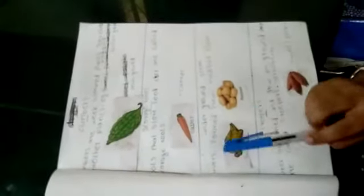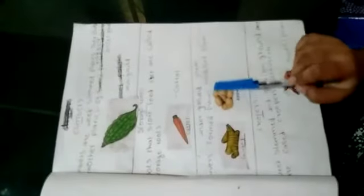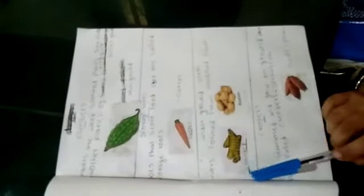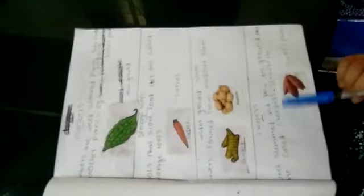Underground stem tubers: Formed from modified stem. Examples: ginger, potatoes.